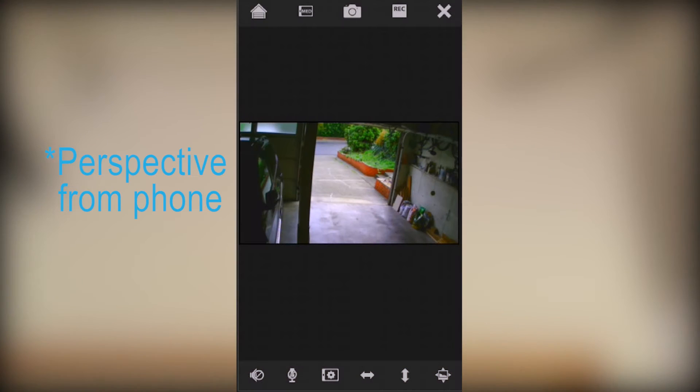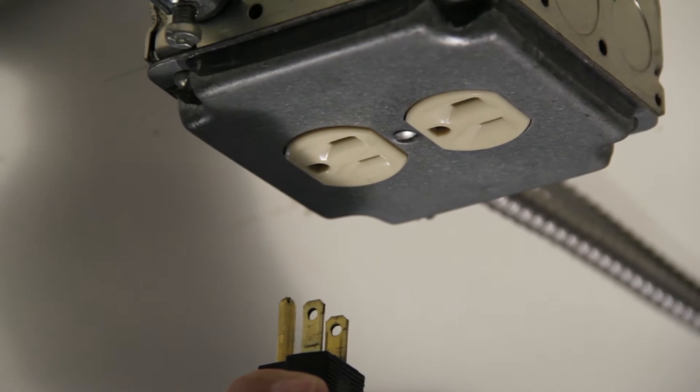Now decide on a good place to mount the camera. We chose this section of drywall, because it has a good view of the garage and is also near a power outlet.